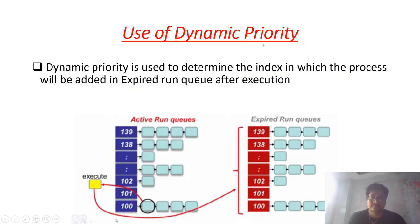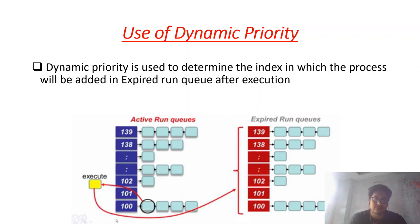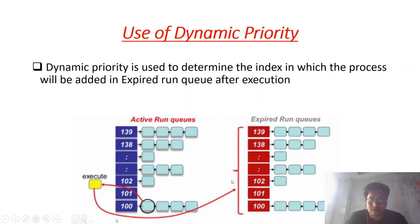The use of dynamic priority is to determine where to place a process in the expired run queue. When a process finishes its time quantum and is moved from the active run queue to the expired run queue, the dynamic priority decides which index in the expired run queue the process should be placed at.